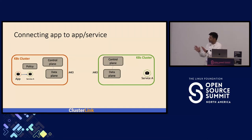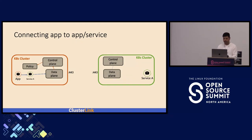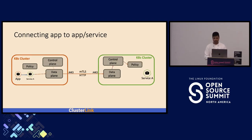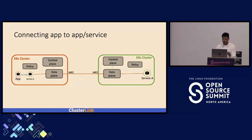Once everything is set up and the actual communication begins, the app communicates with the local service. When the local service is contacted, it undergoes a policy check to verify whether the app is allowed to connect to Service A, then forwards the connection to the green cluster. The green cluster similarly checks its policy to verify that the app from the orange cluster is allowed to talk to Service A. Once everything is confirmed, the data plane hijacks the connection and establishes forwarding, with further communication going through the tunnel without any interference, encrypted using TLS between the gateways.